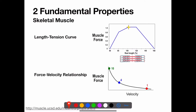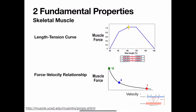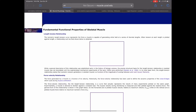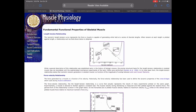The other property is the force-velocity relationship, where the greatest force occurs at the lowest velocity. Force is a decreasing function of velocity, and the highest velocity can be achieved at the lowest forces. That's thought to be a result of the fact that the myosin heads move as the muscle shortens. If you want more of a review of this, there's a really excellent short web page from UCSD that you can go to, and it has a brief overview of that.